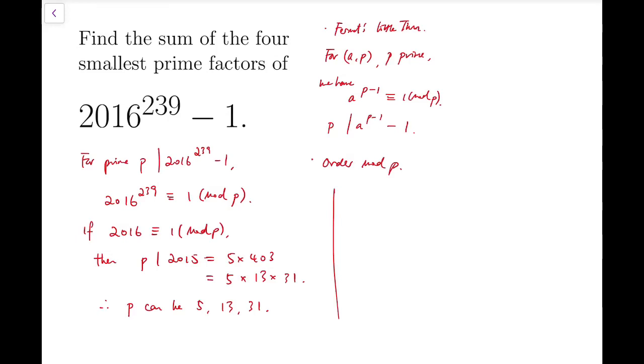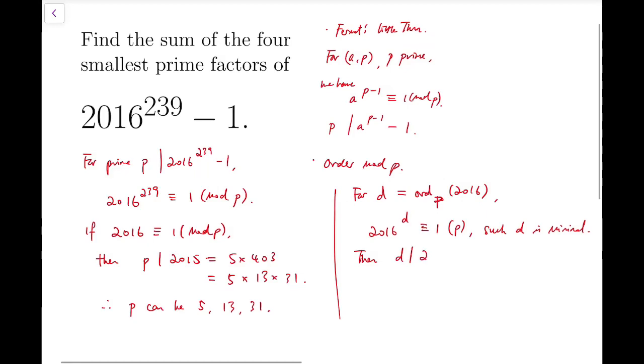Now for d to be the order of 2016 mod p, then 2016 to the power d is congruent to 1 mod p, where d is minimal. Then d must divide 239.